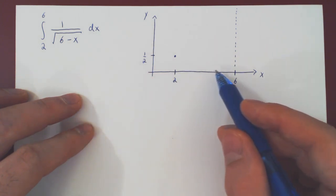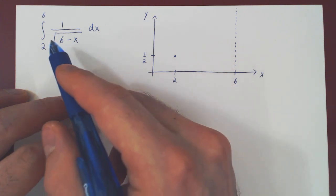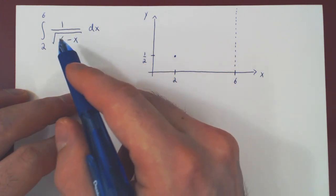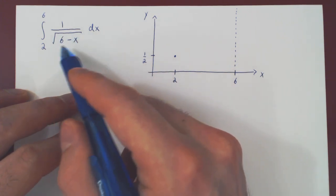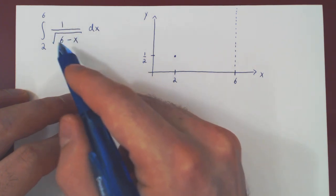As x gets bigger, 6 minus x gets smaller, and so the root of 6 minus x gets smaller.